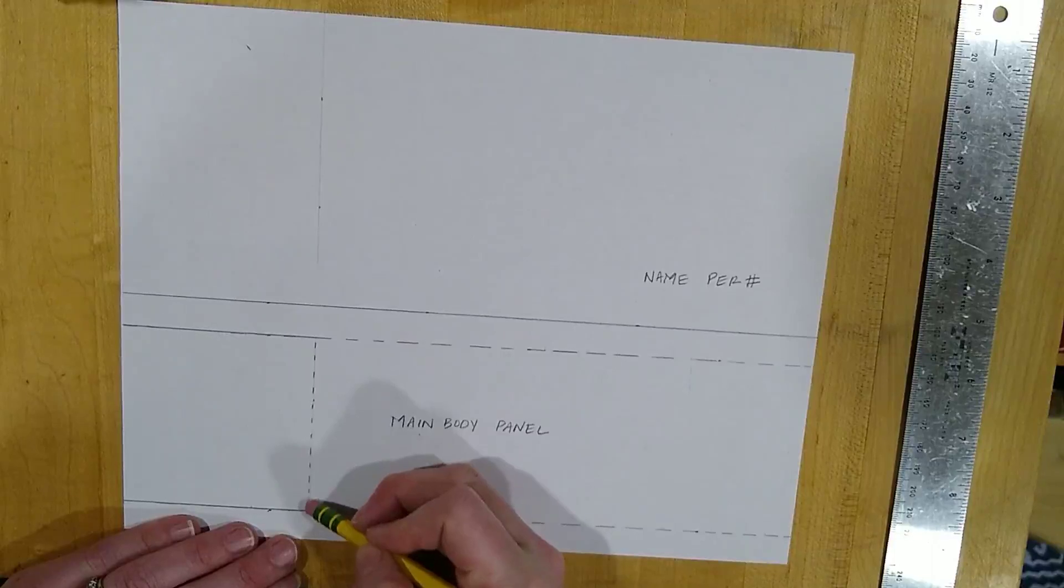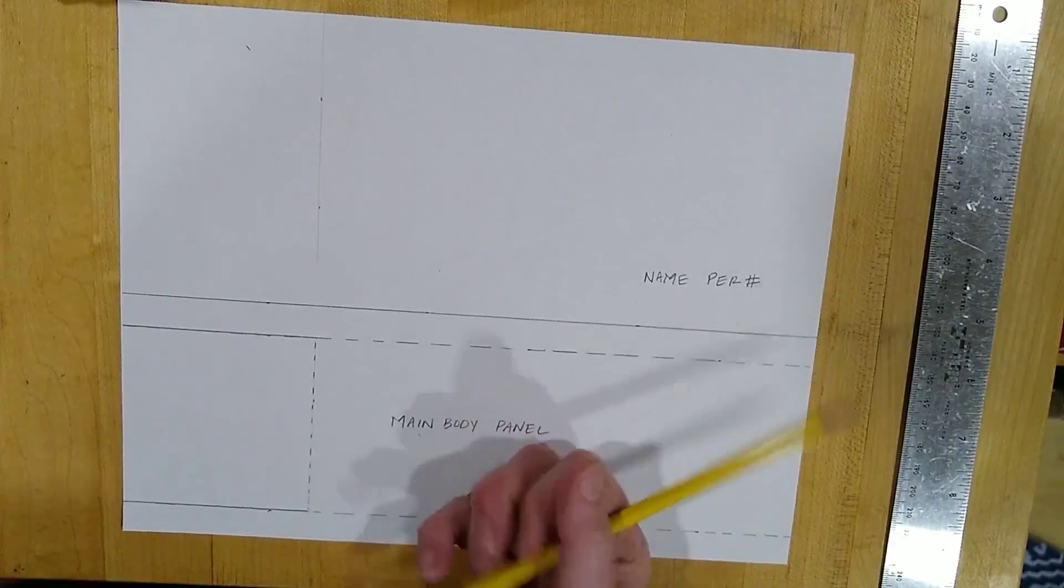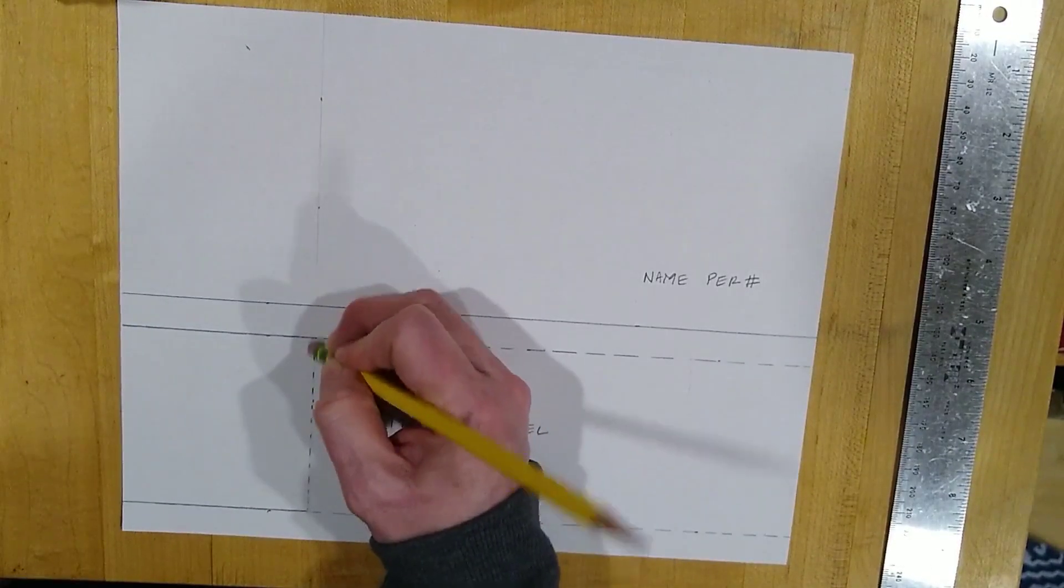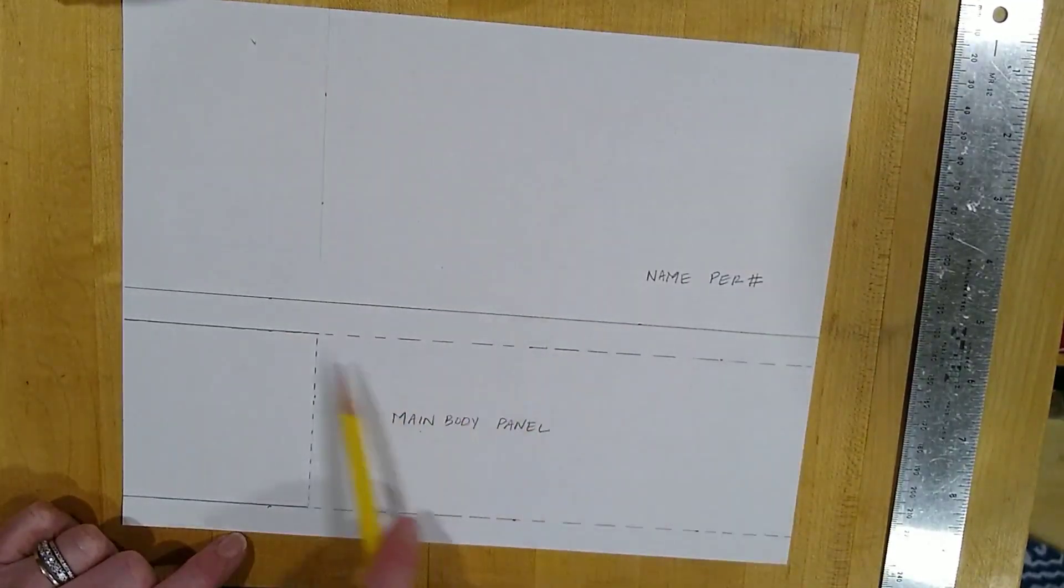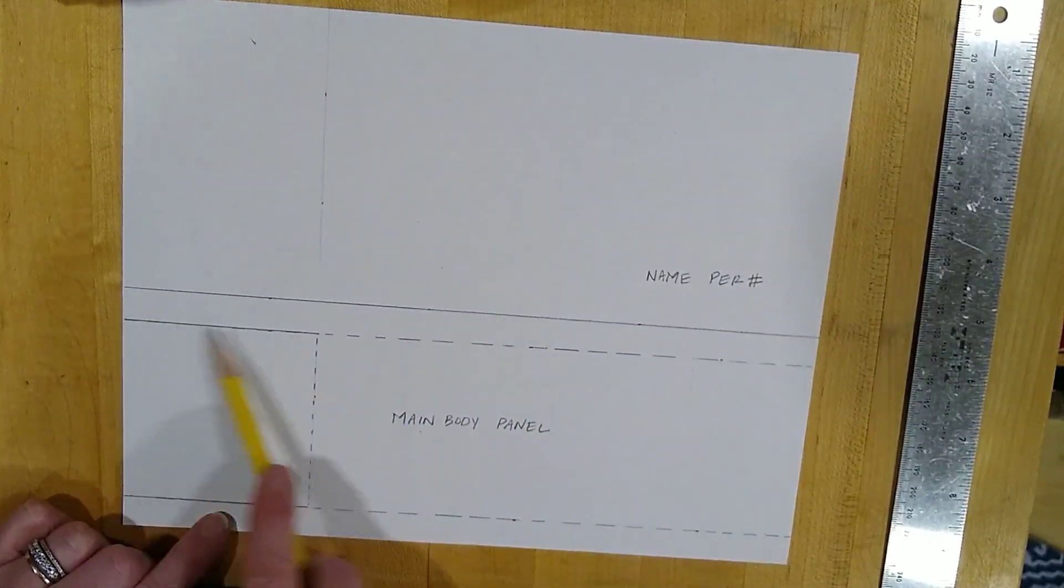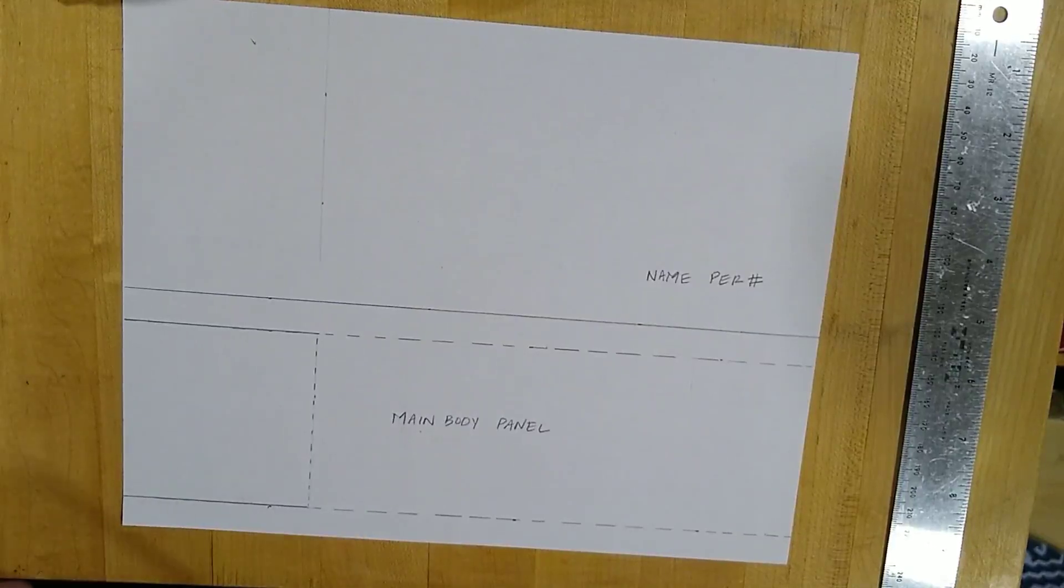So that is the end of your main body panel. I'm just going to correct that a little bit because that looked like it was a solid line to that edge. So these are all dotted and these are solid. So your main body panel is finished.